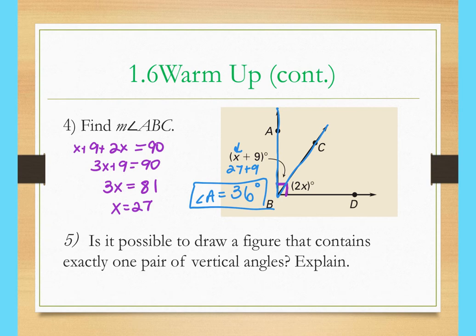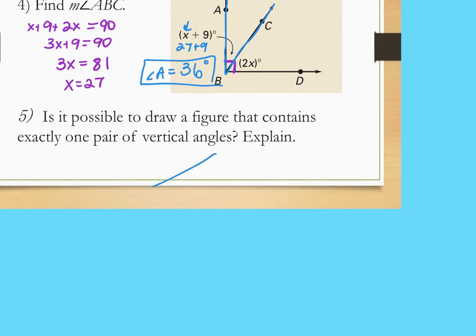Number 5 asks if it's possible to draw a figure containing exactly one pair of vertical angles and explain why. The teacher leads discussion: when drawing one pair of vertical angles, you always create at least two pairs. Any explanation stating this is acceptable.